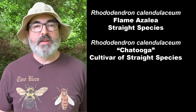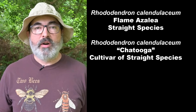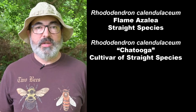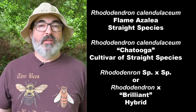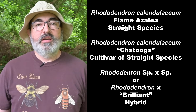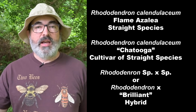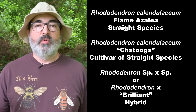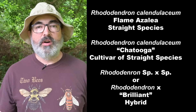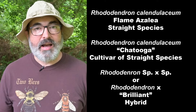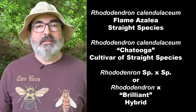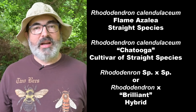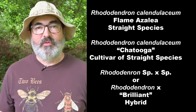If it has a species name with a cultivar name in quotes, then that is a cultivar of that species. If the label has Rhododendron species × species, or Rhododendron × with a cultivar name in quotes, that is a hybrid. It can get confusing, but this is the best way I know to tell you what to look for.